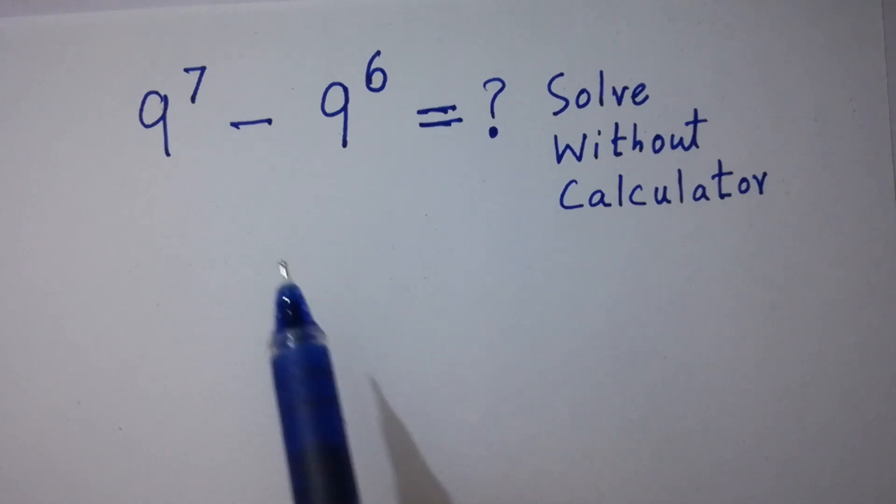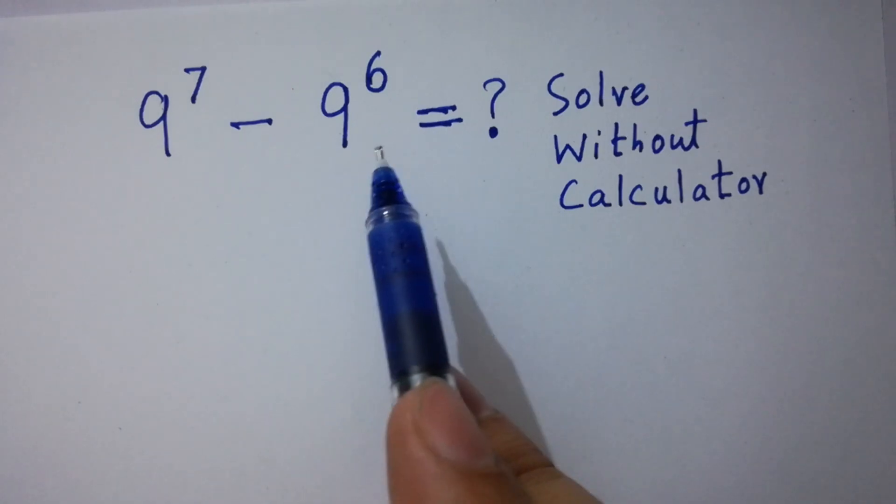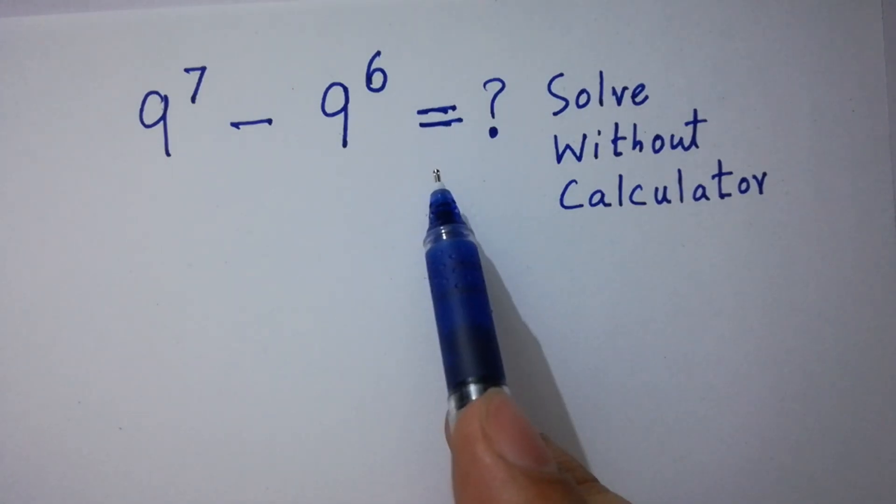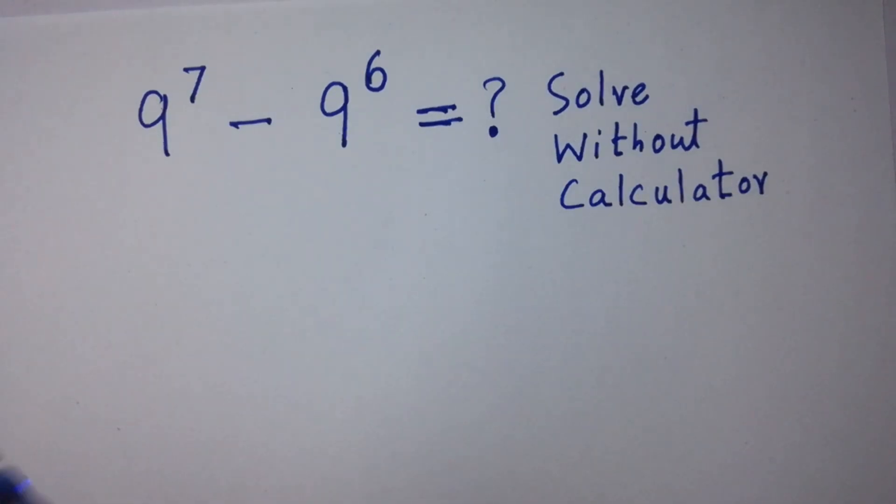Hello friends, 9 to the power 7 minus 9 to the power 6 equal to what? Solve without calculator. Let's have a solution.